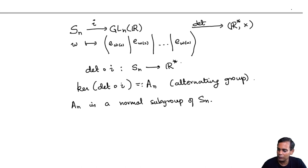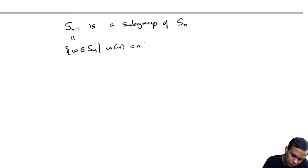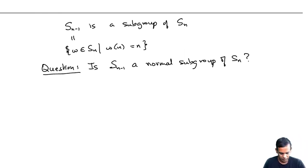Here is another question for you. We have this, in an earlier lecture we saw that Sn-1 sits inside as a subgroup of Sn. We just think of it as the subgroup of Sn consisting of all permutations which take n to n. The question is, is Sn-1 a normal subgroup of Sn?